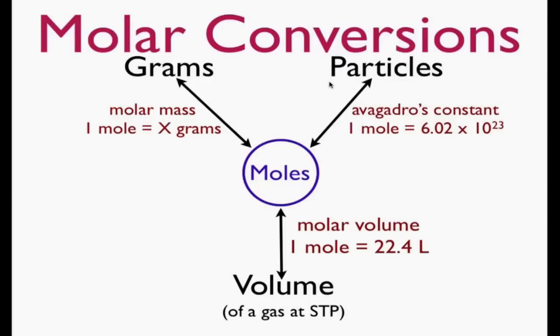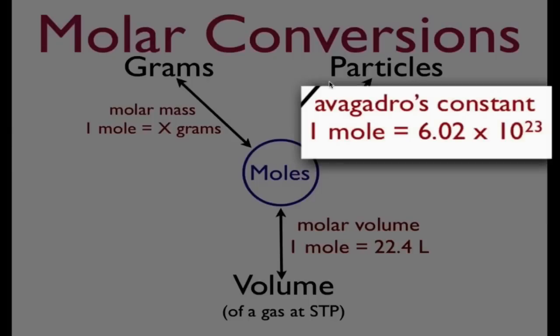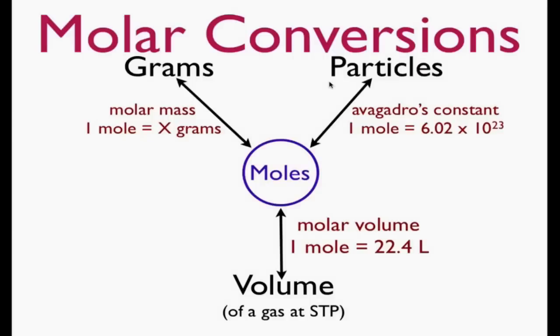And then we can convert very easily between particles and moles through Avogadro's constant, because we know that one mole of the substance is equal to 6.02 times 10 to the 23rd particles, which we mean like molecules or atoms or ions.